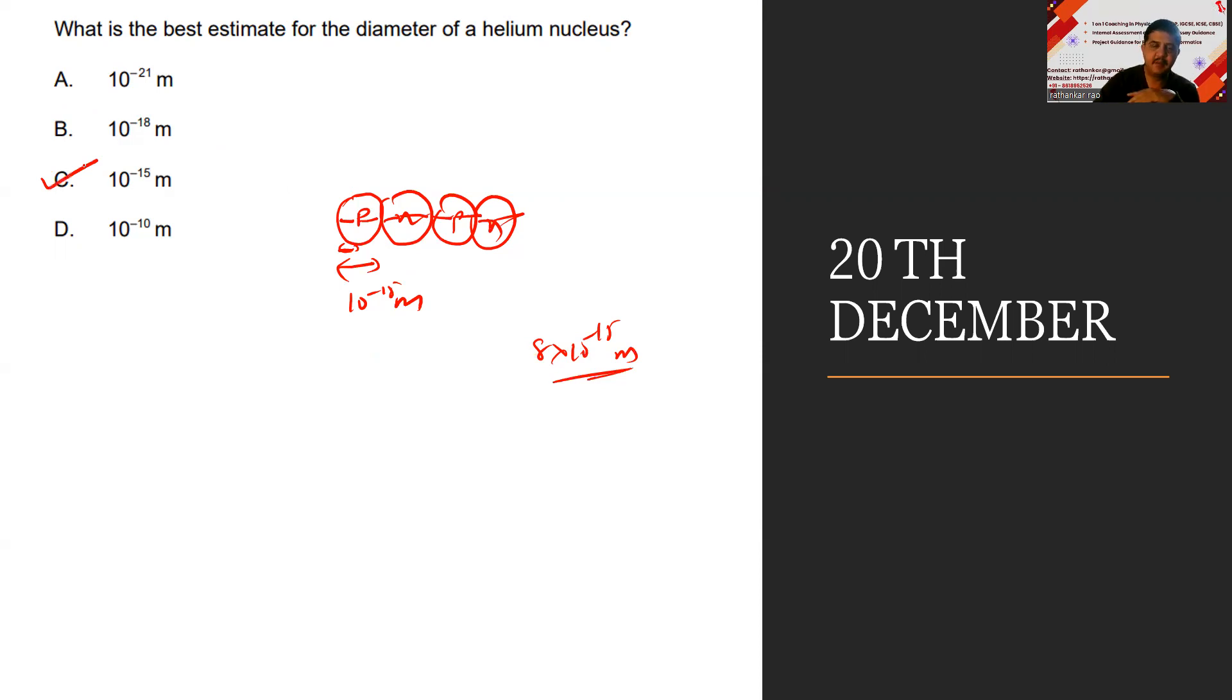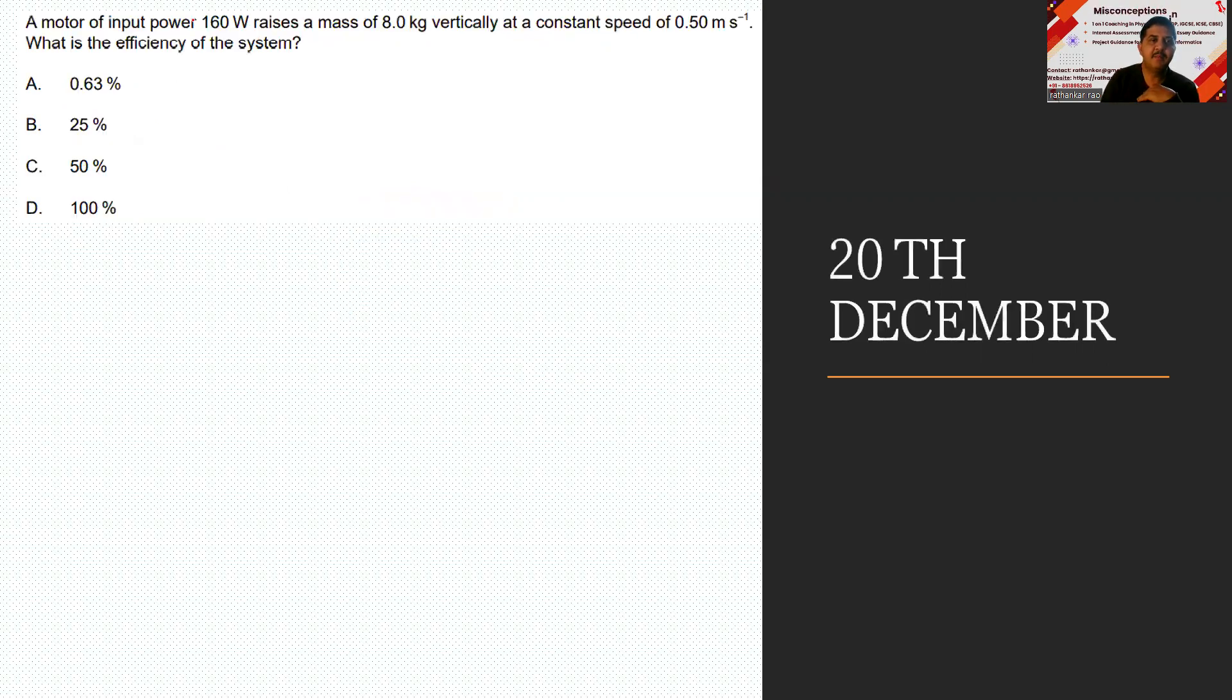Maximum is seen to be 8 into 10 to the minus 15, so the order of magnitude should be 10 power minus 15 meters. Then a motor of efficiency, input power 160 watts, raises a mass of 8 kg at a constant speed v.